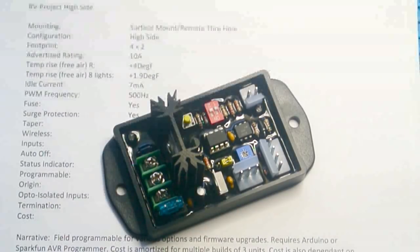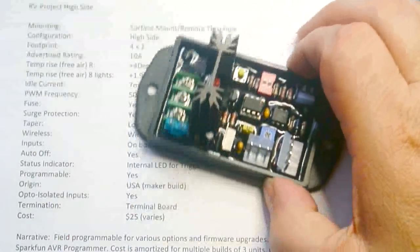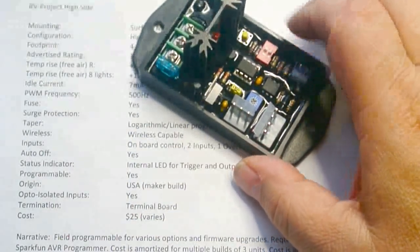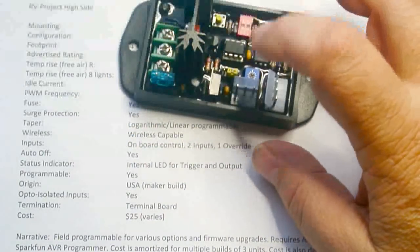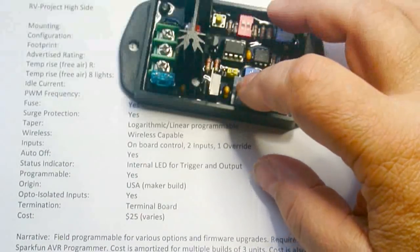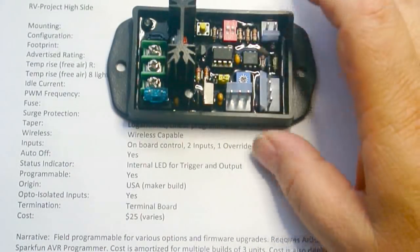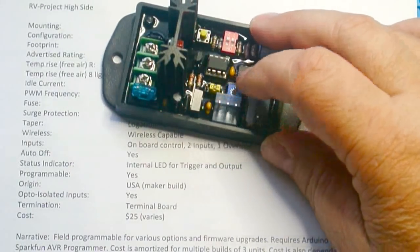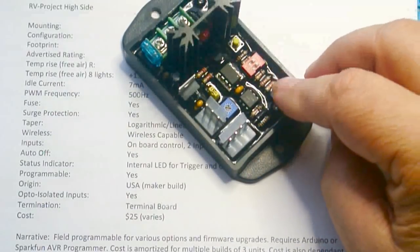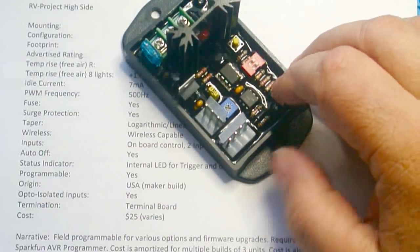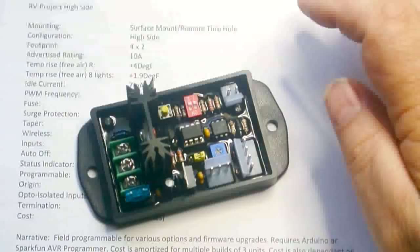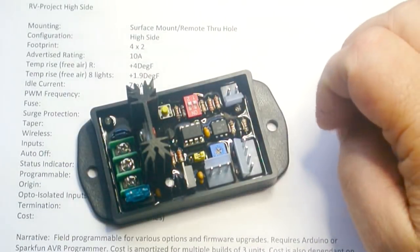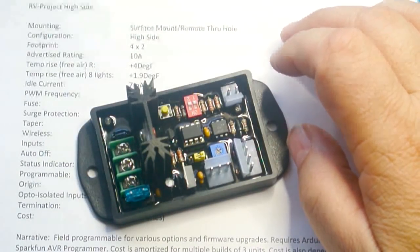And next is a dimmer of my design. This is the high side version. This has the PWM frequency of 500 Hz. It has fuse protection. It also has TVS surge protection. It's a logarithmic taper, where most of them are linear. It is wireless capable, although there is no wireless on board. It has two inputs on the board, plus a third control that can be used as an input or other control. It is field programmable. The cost is somewhere around $25. The downfall is that you have to build them yourself, which if you go to my website, I've got a complete set of articles on how to build these. Now this does require an external control. As it is right now, it will not turn on or turn off. You have to wire up at minimum of one momentary switch.